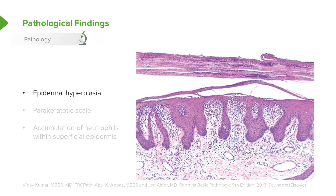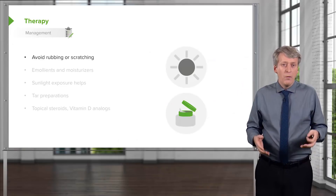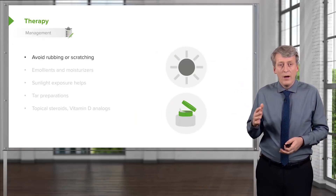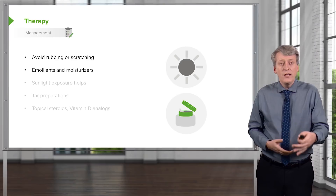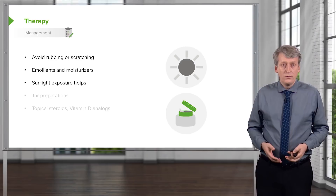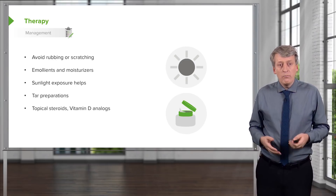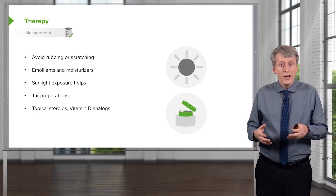Pathologically, you would notice epidermal hyperplasia and parakeratotic scale. These patients have an accumulation of neutrophils within the superficial epidermis. We recommend avoiding rubbing or scratching because minor trauma makes it worse, and we give emollients or moisturizers. Sunlight exposure helps. Tar preparations will help and we can put patients on topical steroids or vitamin D analogues.